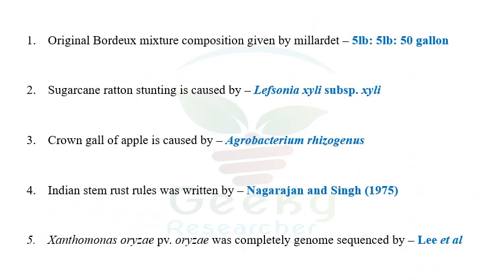The first question is about Bordeaux mixture and its composition. Remember that all the answers are based on the options given in the exam. Some questions may seem to have two or three answers or irrelevant answers, but all answers are based on the exam options. The original composition of Bordeaux mixture given by Millardet is 5 lb of copper sulfate, 5 lb of lime, and 50 gallons of water. We have studied the composition as 1:1:100, that is 1 kg copper sulfate, 1 kg hydrated lime, and 100 liters of water.